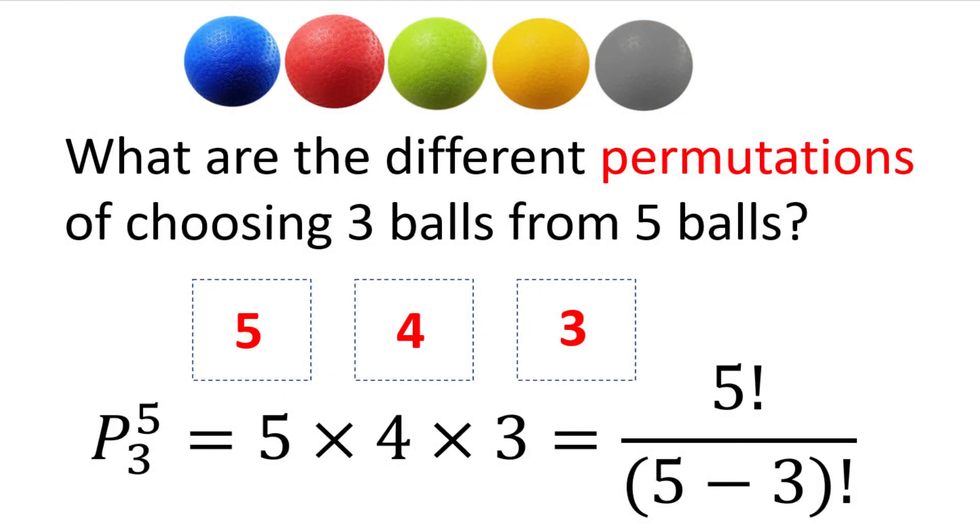We can try another example, but now finding the permutations of choosing three balls from five balls. The answer would be five multiplied by four multiplied by three, or five factorial divided by five minus three factorial.